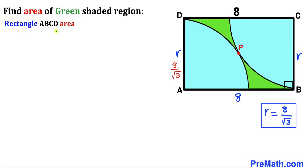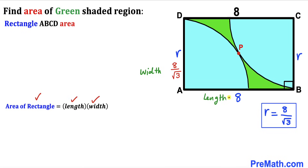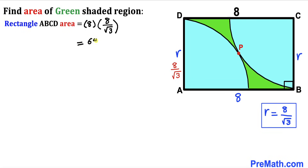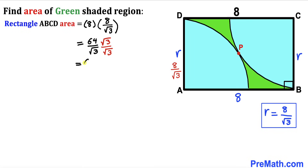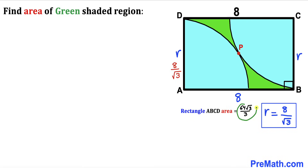Next, let's calculate the area of rectangle ABCD. Recalling the area formula — area = length × width — the length is 8 and the width is 8/√3. So the area is 8 × (8/√3) = 64/√3. Rationalizing by multiplying and dividing by √3, since √3 × √3 = 3, the rectangle area becomes 64√3/3.